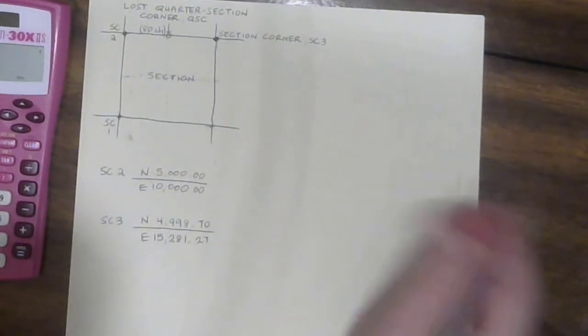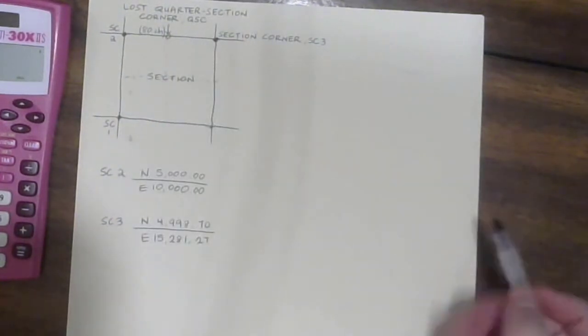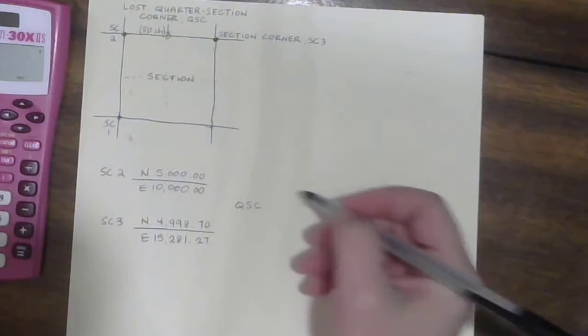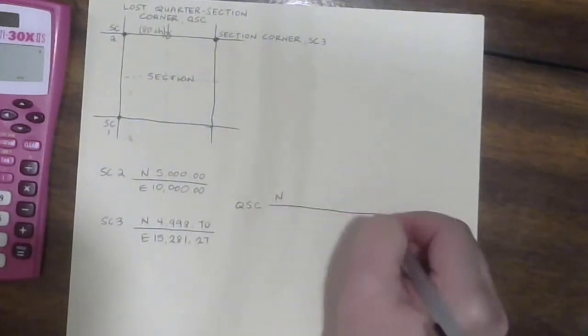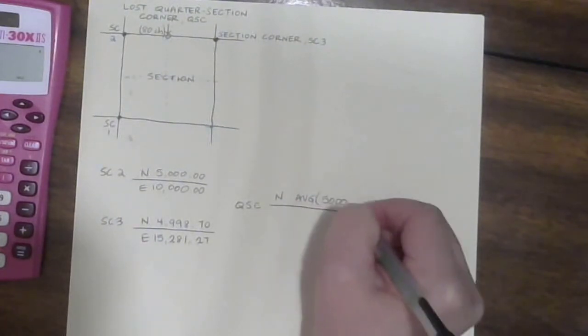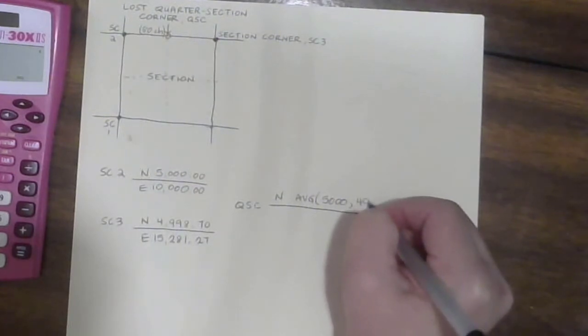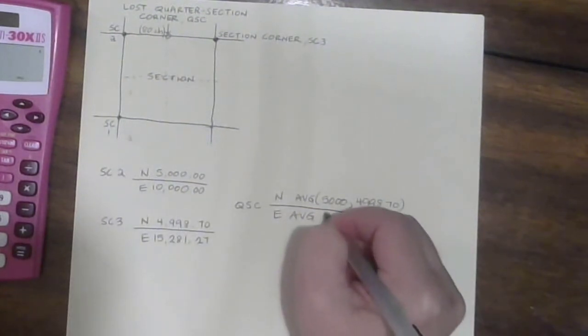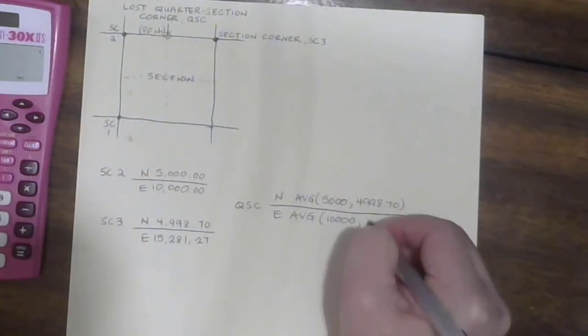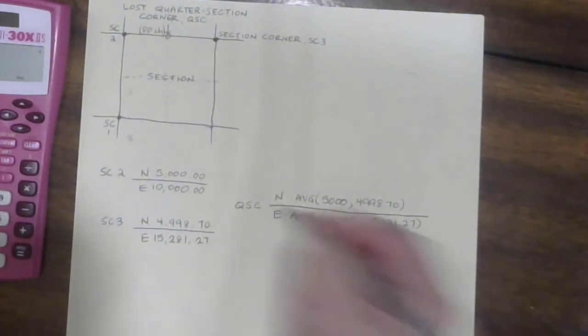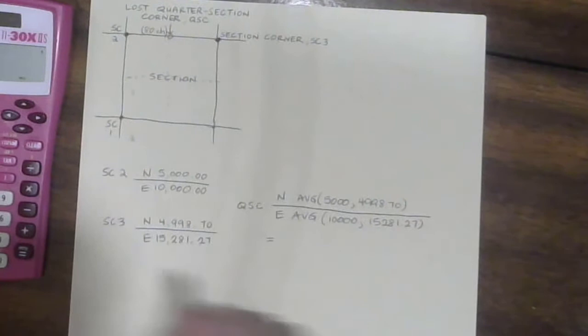So now we're going to take, we want our lost quarter section corner is going to be a northing of the average of 5,000 and 4,998.70 and the easting is going to be the average of 10,000 and 15,281.27. So that equals, it's very simple.